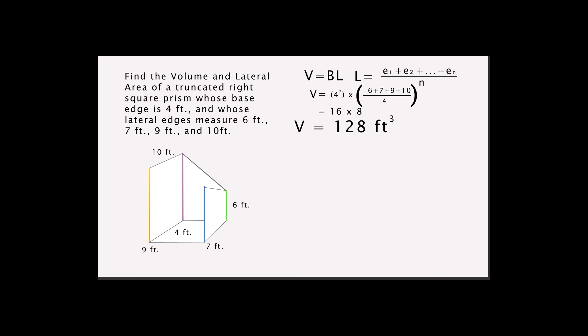For the lateral surface area, the lateral surface area is equal to half times 6 plus 7 times 4, plus half times 7 plus 9 times 4, plus half times 9 plus 10 times 4, plus half times 10 plus 6 times 4, which is equal to 26 plus 32 plus 38 plus 32. The answer is 128 square feet.